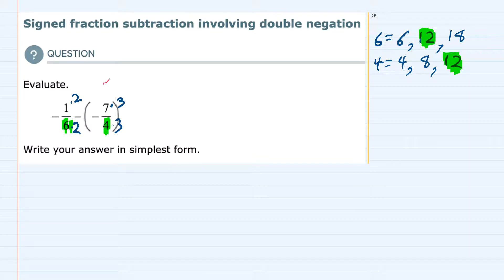So let's rewrite the problem now. The first fraction is still a negative. In the numerator, I have 2 times 1, which is 2. And in the denominator, 2 times 6, which is 12.